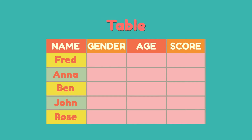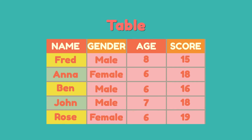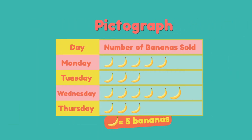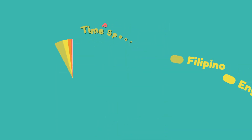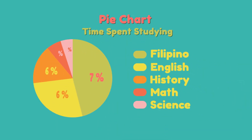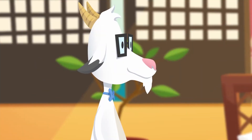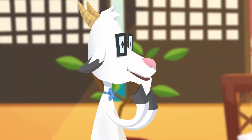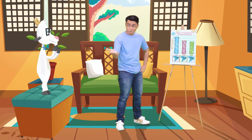Like tables — these are used to present different information through the use of columns and rows. We also have pictographs that show information using pictures. And you have your pie charts that are used to present parts of a whole. Cool! Instead of looking at many numbers, these are easier to understand.